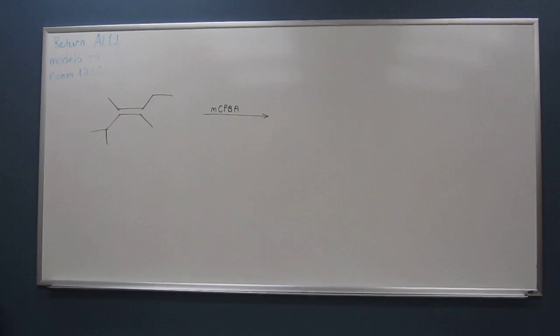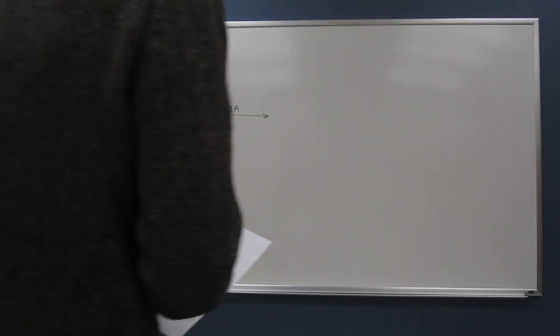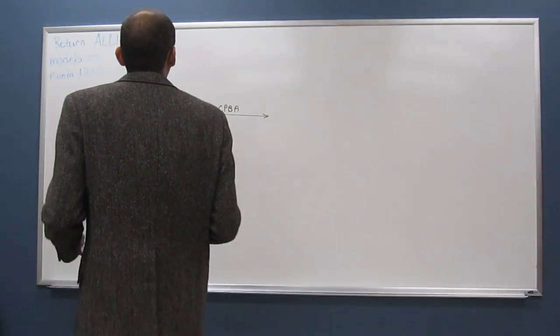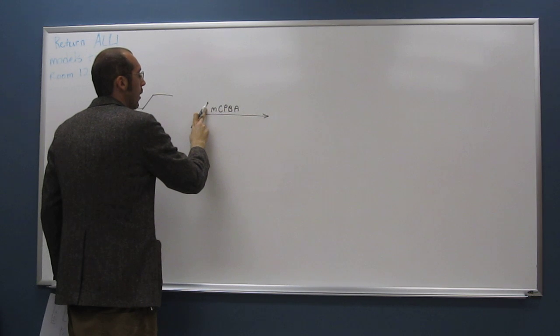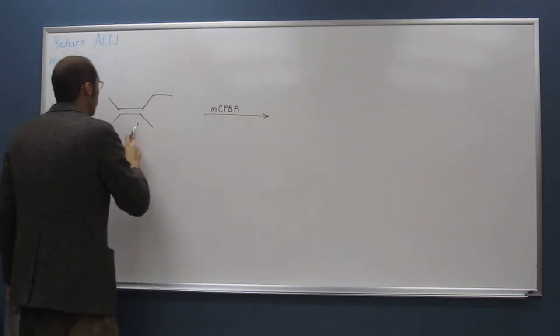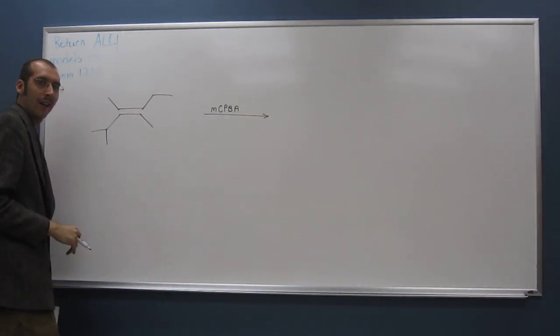Okay, so let's try this reaction. Let's do the mechanism for it. So this is MCPBA reaction. Remember whenever you see MCPBA, that's going to take an alkene and make an epoxide out of it.